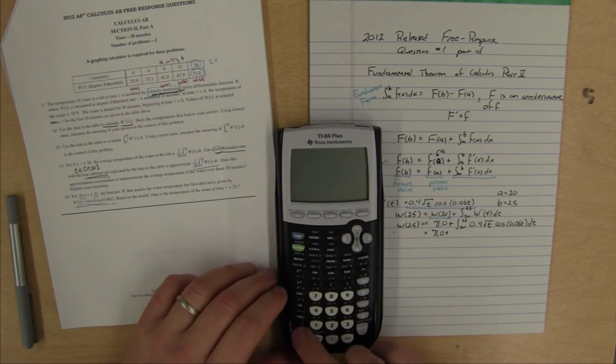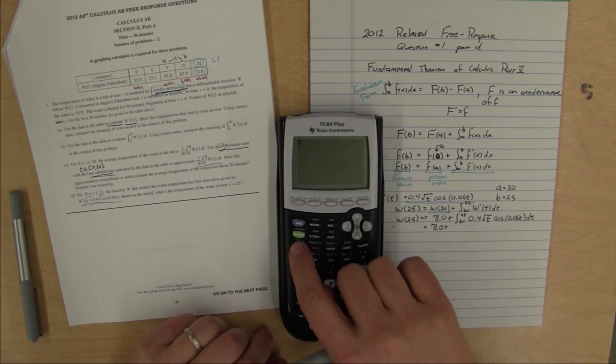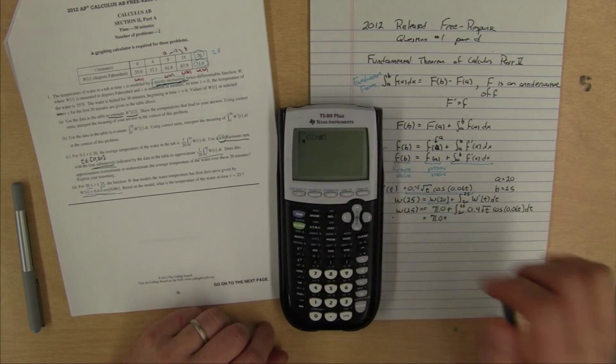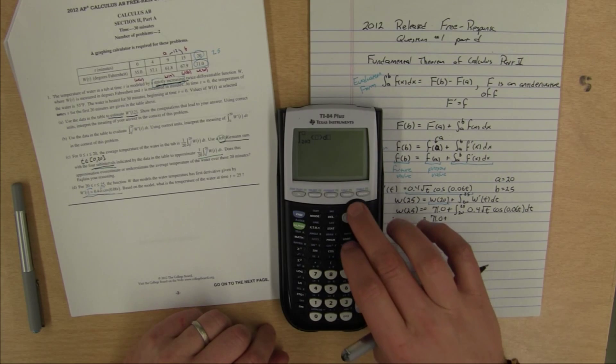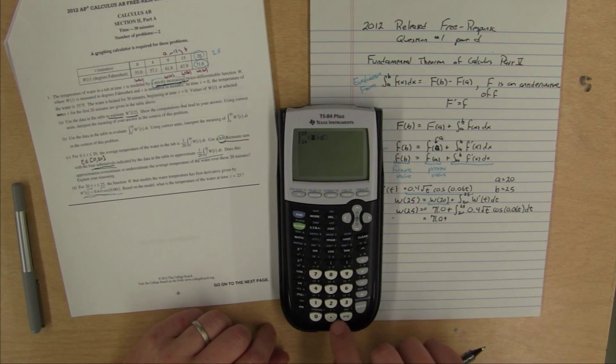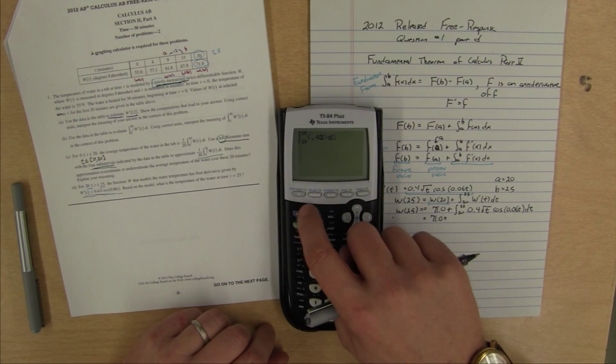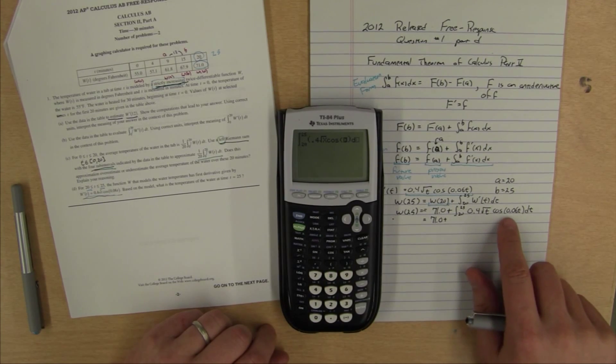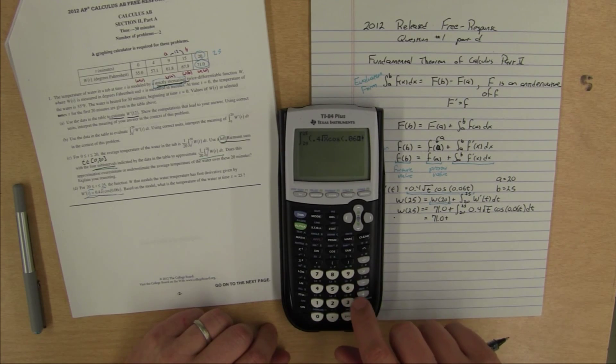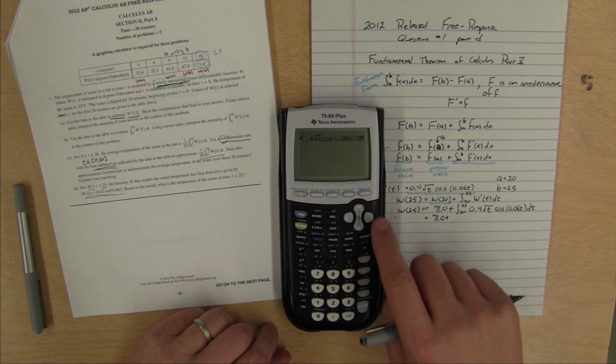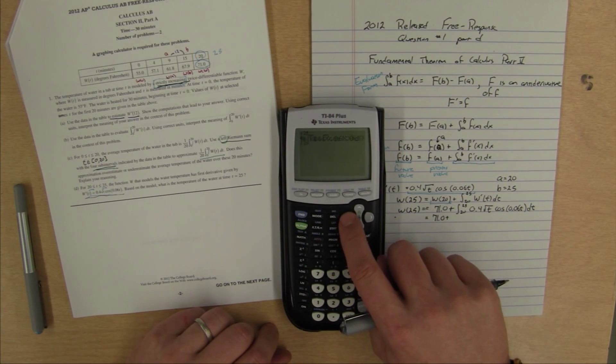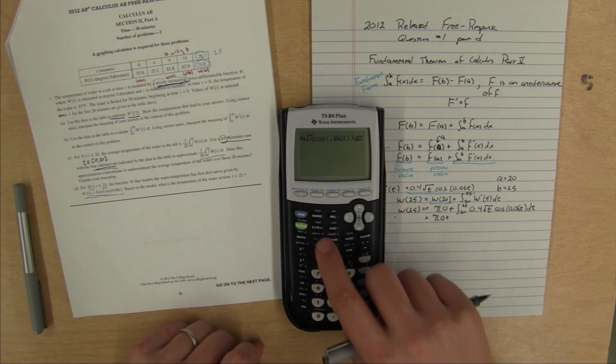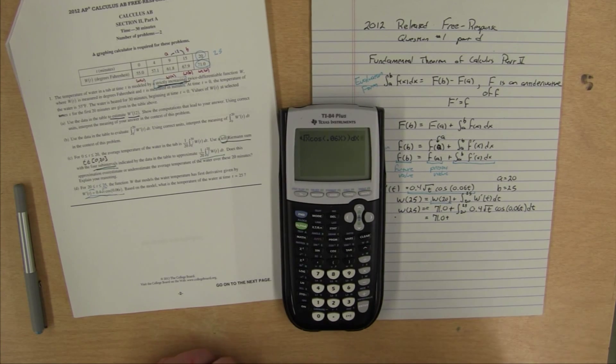It's 71.0 plus this integral. We now can just go to our calculator. We need to do an integral. That's math 9 for the integral. We've got our integral to fill in. We want 20 to 25. We need to put in this function, 0.4 square root t. So shift square root. We're using x instead of t in our calculator. We need to arrow over to get out of the square root feature. Cosine. We need 0.06 t. We don't need that leading 0. 0.06 and we're going to put x. We need to close the parentheses for that. We've got our whole function enclosed in parentheses. Now we just need to put our x for dx.